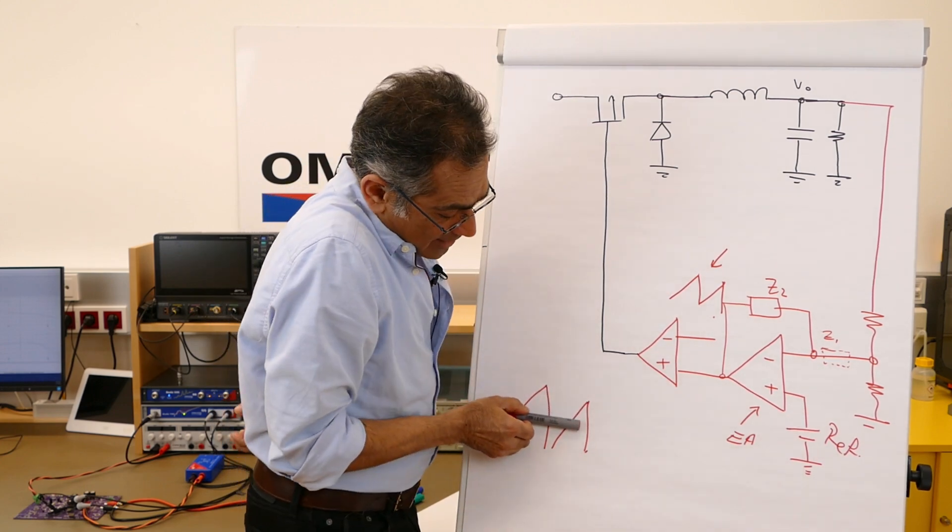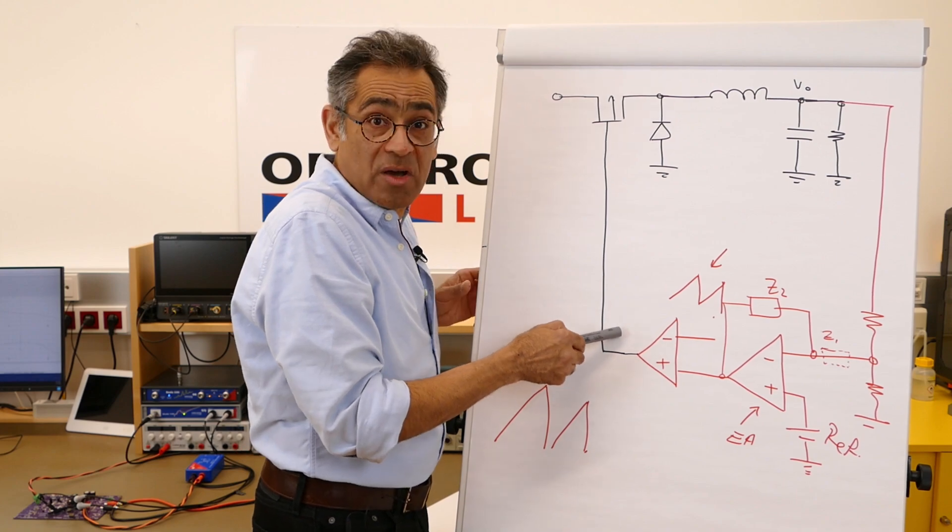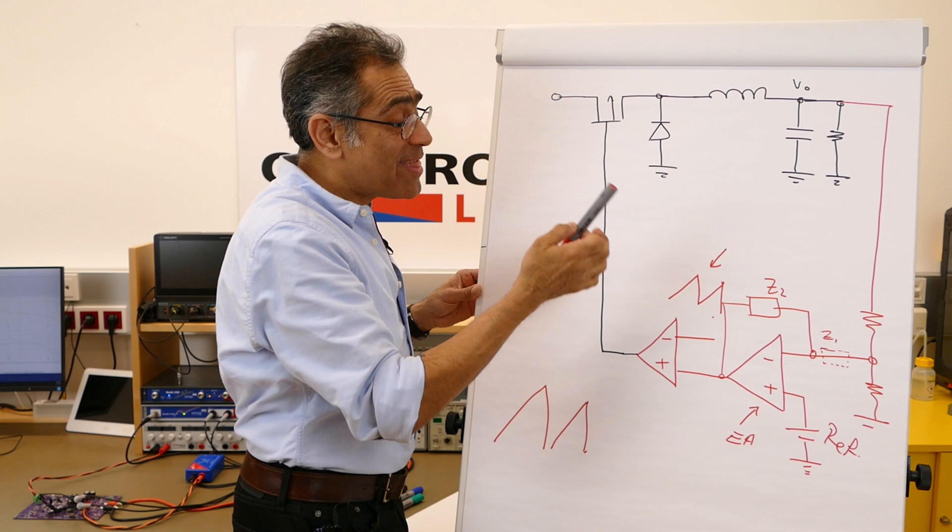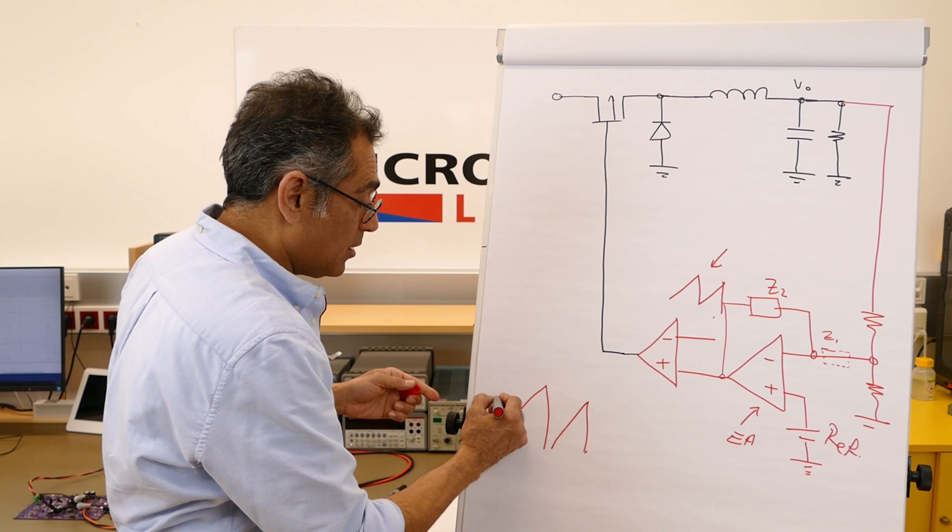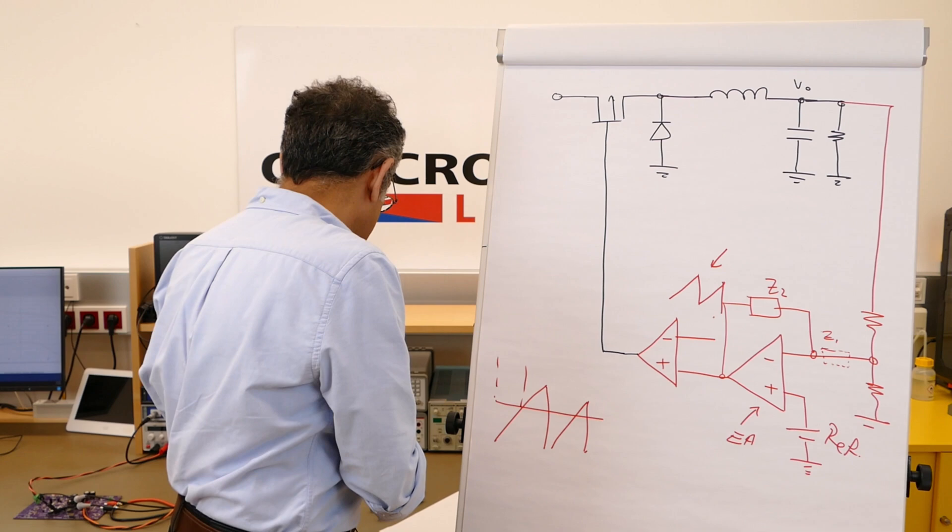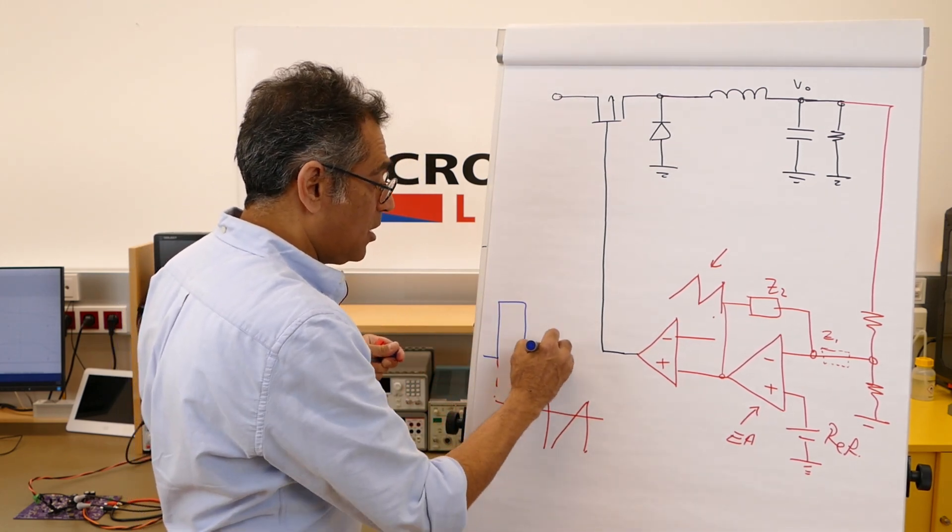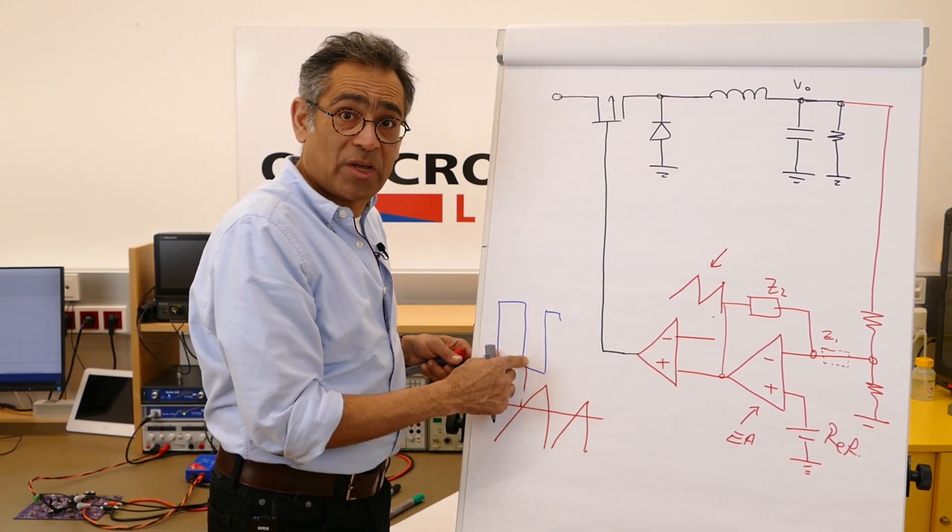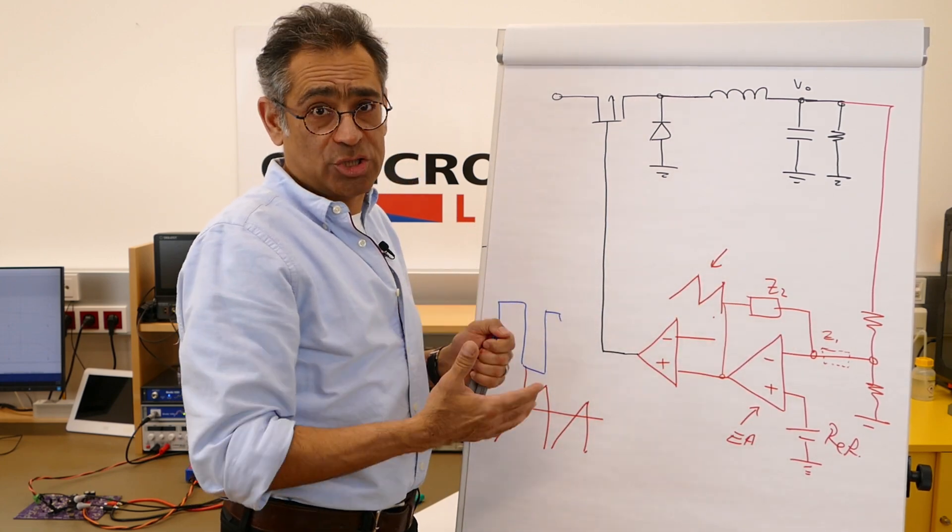As the error signal goes up and down, the output of this is either going to be high or low because it is a comparator, and that goes to the gate drive which drives the MOSFET. Therefore, as your error changes, the duty will change. So this will be your PWM signal going to the gate drive, and as this goes up and down, this duty is going to change. And that is the simplest way that we close our loop, and that is called voltage mode.